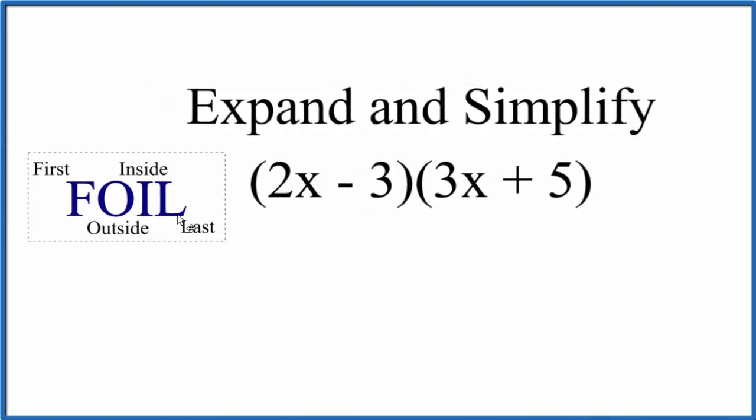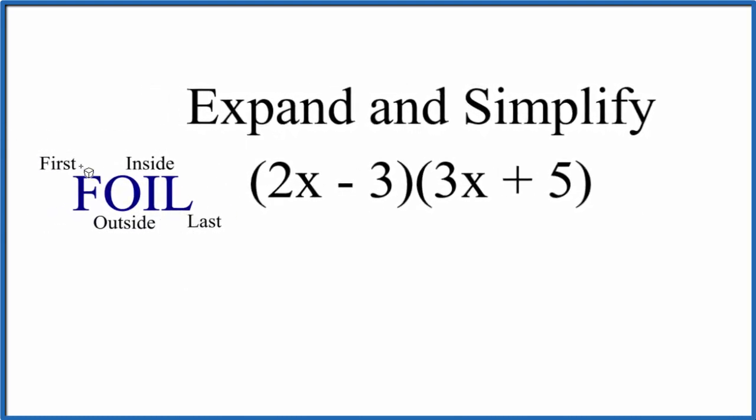It's helpful sometimes to think of this as the FOIL method. So, we're going to take the first term, that's the 2x, and the 3x. Those are the first terms in each of these. We'll multiply them together. So, 2 times 3x, 6x squared.